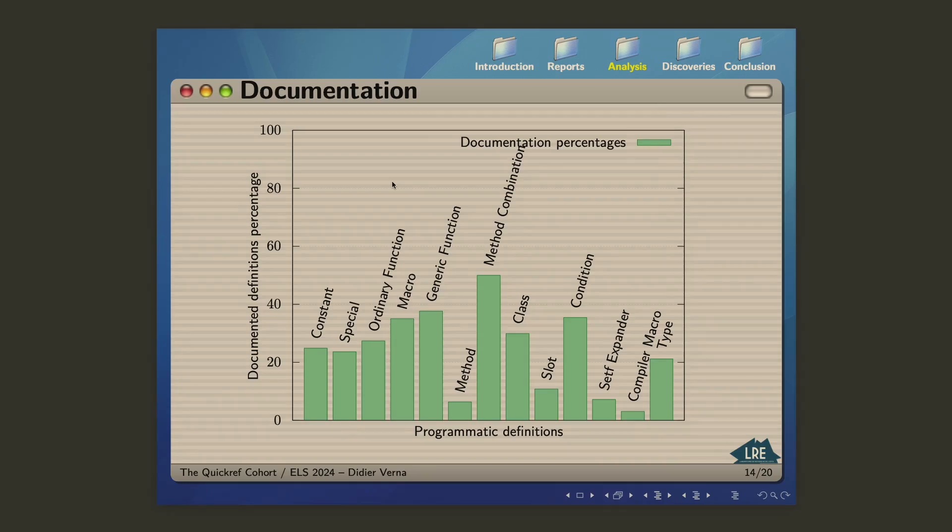Here is another interesting insight. As a guy fond of documenting and typesetting, I was mostly interested in that, actually. This is the percentage of documented definition sorted by category of programmatic definition. You can see from the general shape of this that approximately, roughly speaking, a third of programmatic definitions in the QuickLisp world are actually documented. One definition out of three or four is currently documented.